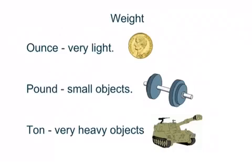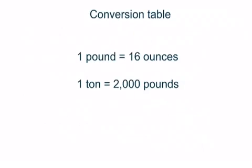And then a ton. Tons are used for things that are extremely heavy, like tanks, big ships, stuff like that. Really, really heavy stuff. Really, there's not much to this. The conversions are very simple. One pound is 16 ounces, and one ton is 2,000 pounds.